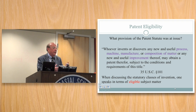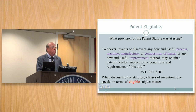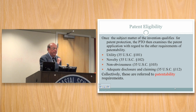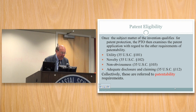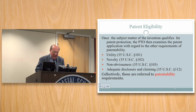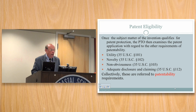We call these the statutory classes of invention — machines, manufactures, and compositions of matter. When we talk about those things, we talk about it in terms of being eligible subject matter. Once the invention qualifies for patent protection, that is it's eligible, then the PTO examines the application with regard to the other requirements of patentability. Those are things like utility, novelty, non-obviousness, and adequate disclosure and claiming of the invention. Collectively, those are what we call patentability.